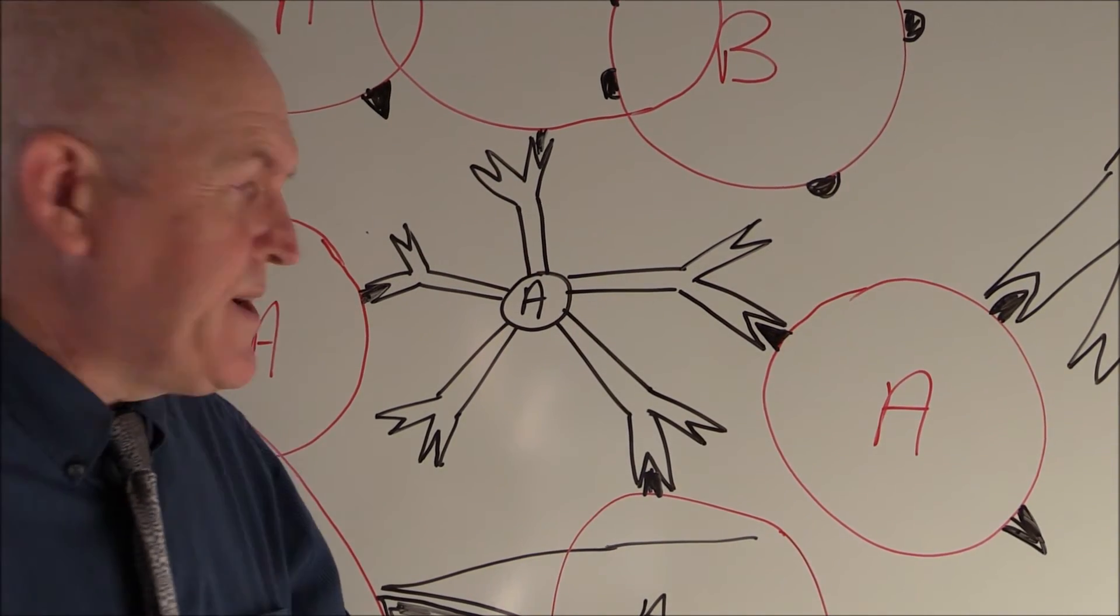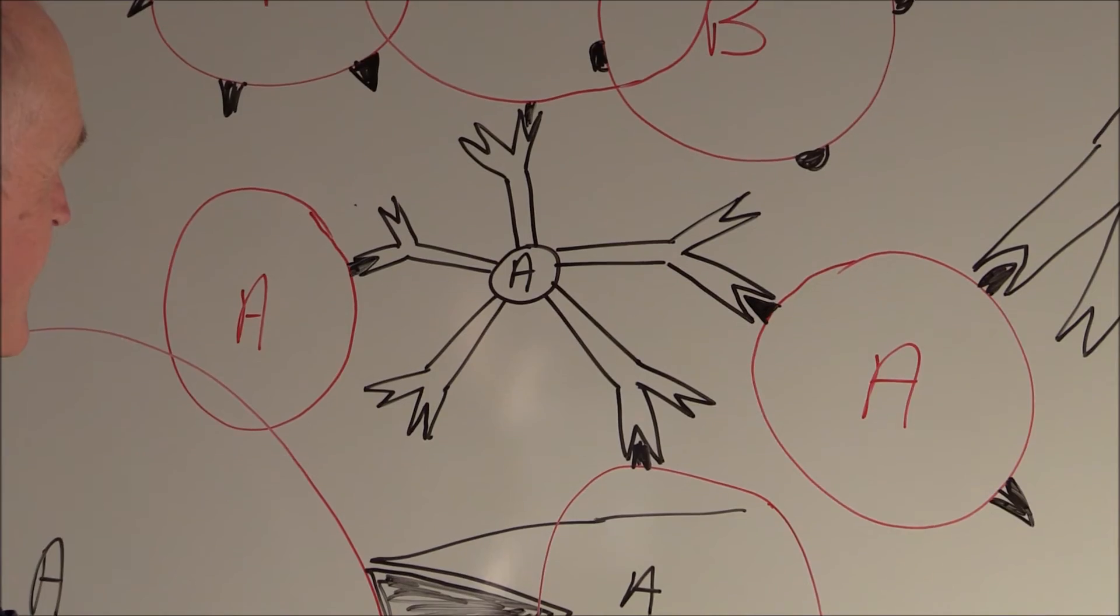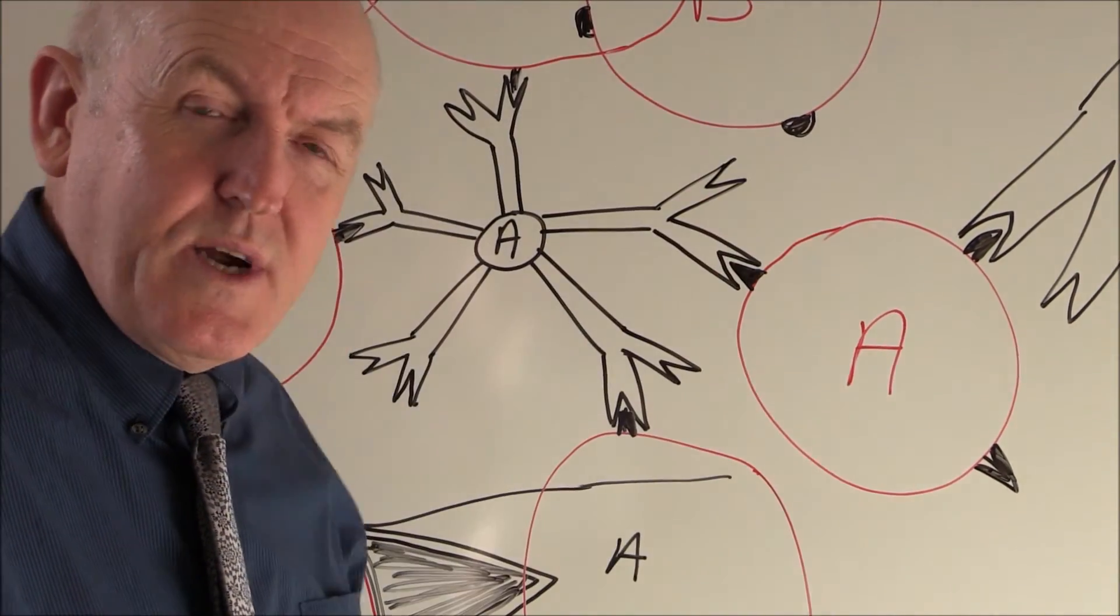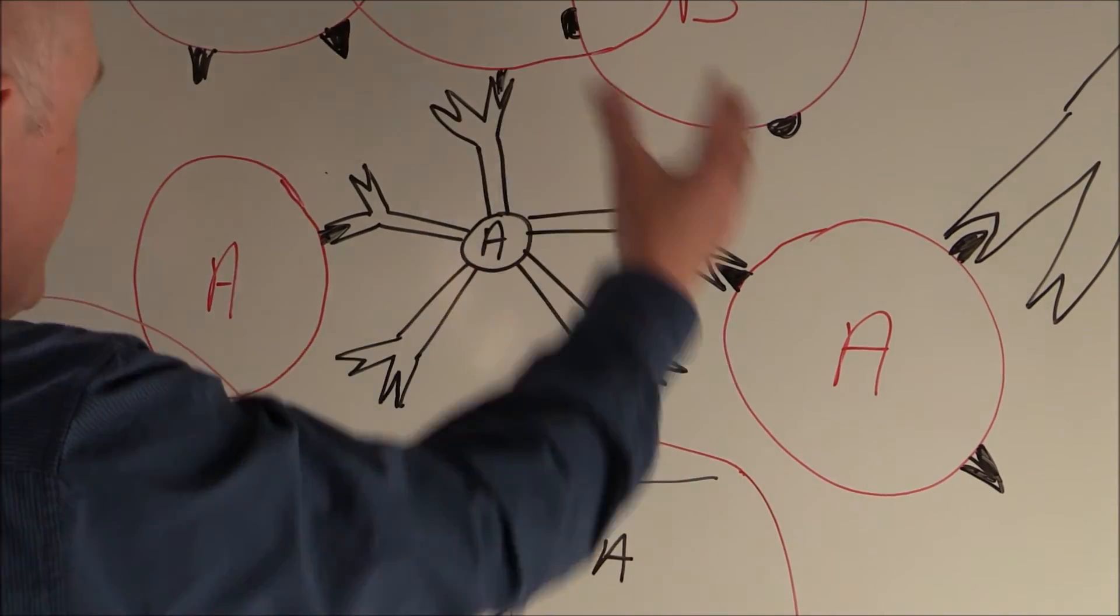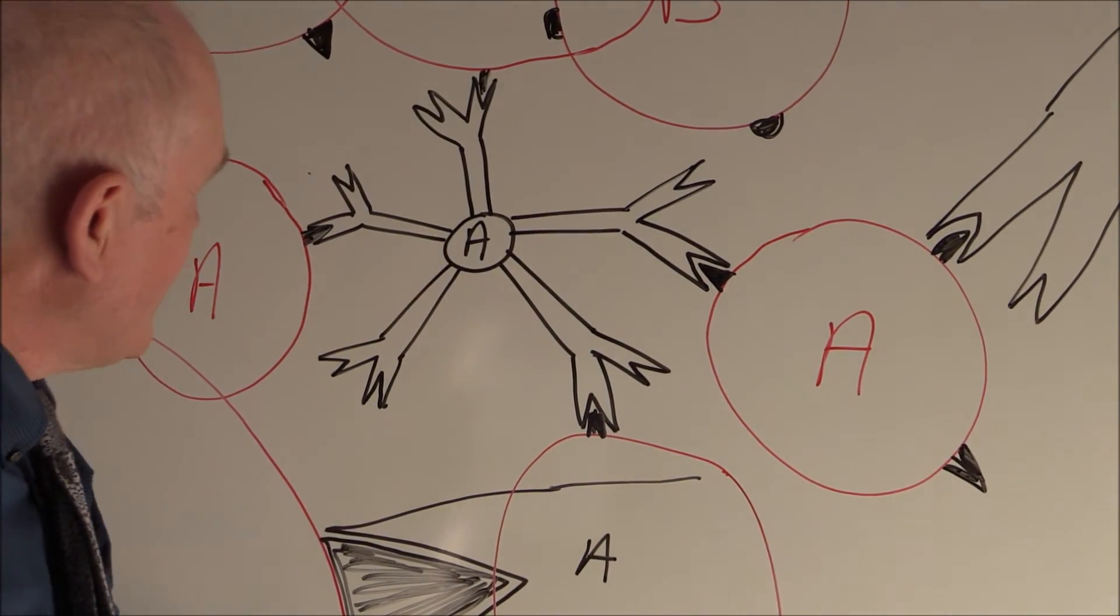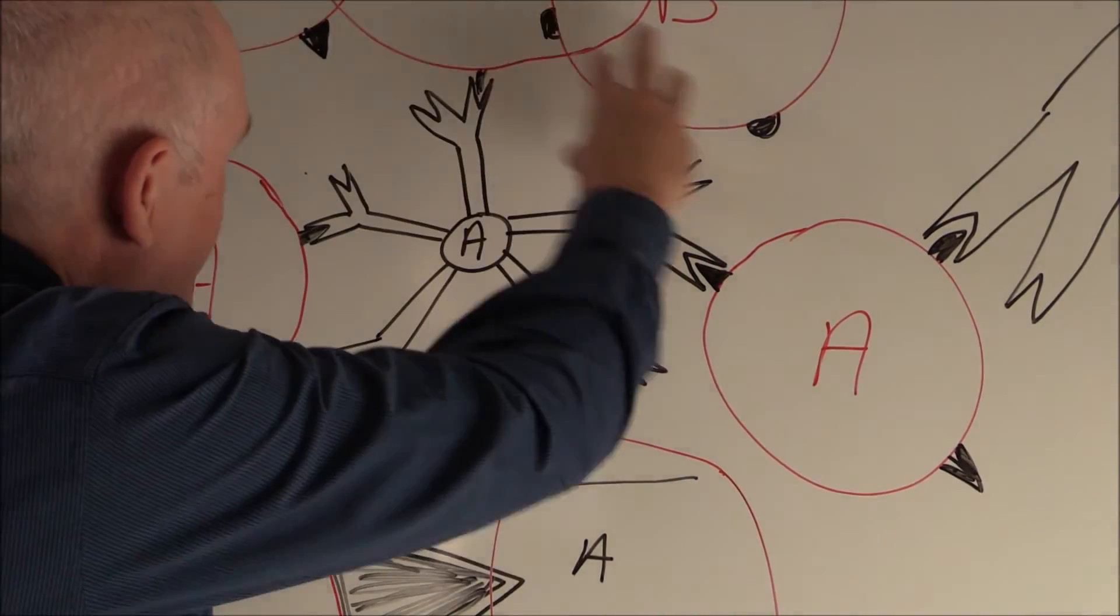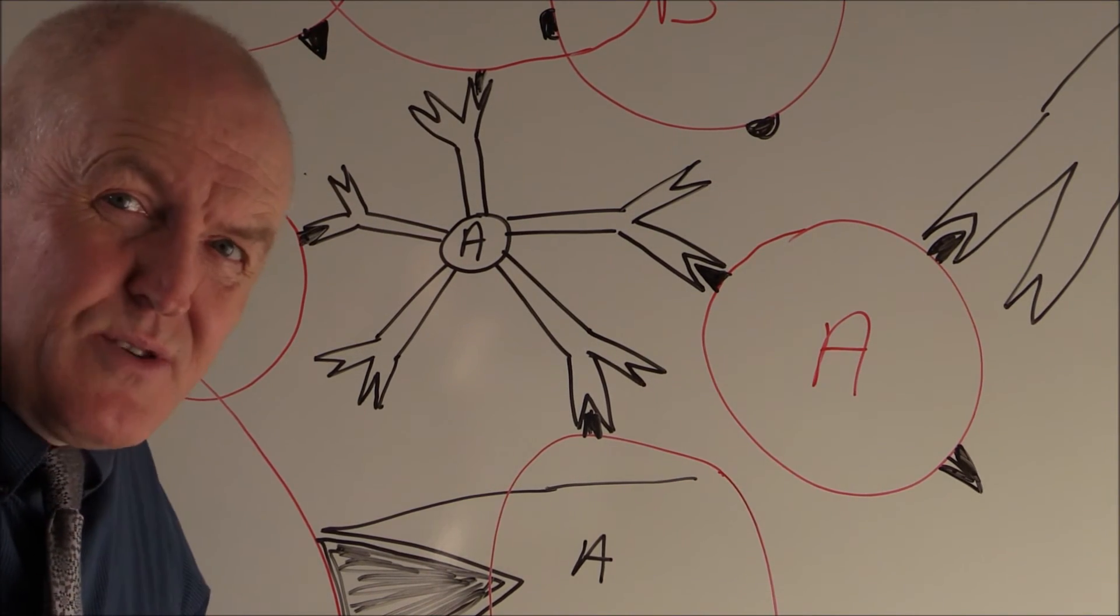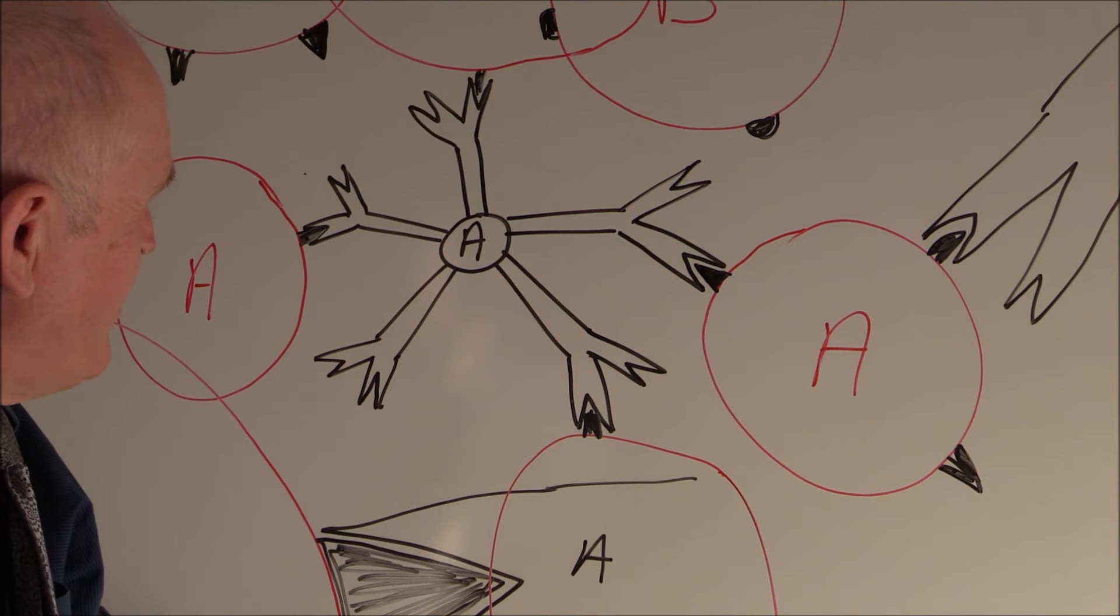So we can see that if we give group A blood to someone who is blood group B, we're going to get agglutination of the donated red cells as they are agglutinated, all clumped together by the A antibodies in the recipient's plasma.